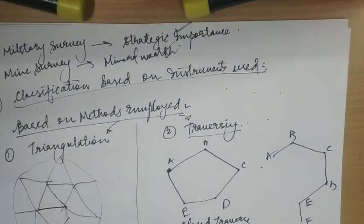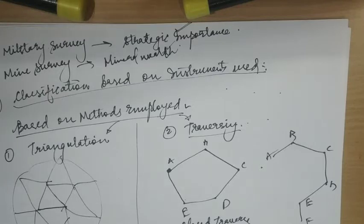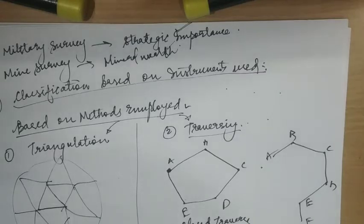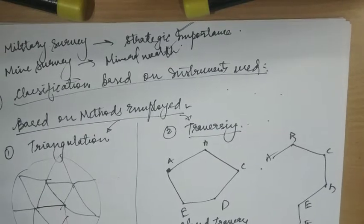The third category of classification is based on instruments used. This type of surveying includes chain survey, compass survey, plane table survey, theodolite survey, tachymetric survey, modern survey using electronic equipment like EDMs (electronic distance meters) and total stations, and last is photographic and aerial survey. These types of surveys will be discussed in further lectures.